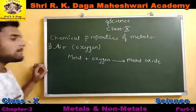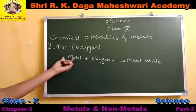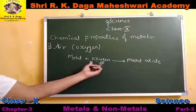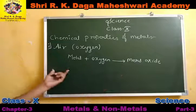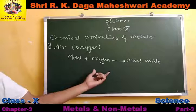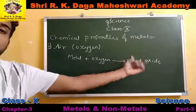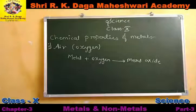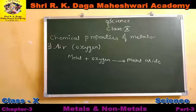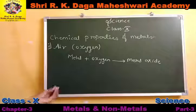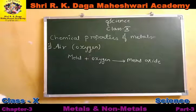For example, copper reacts with oxygen to form copper oxide. Iron reacts with oxygen to form ferrous oxide. Aluminium reacts with oxygen to form aluminium oxide. Magnesium reacts with oxygen to form magnesium oxide.